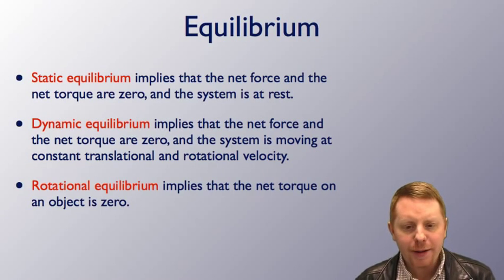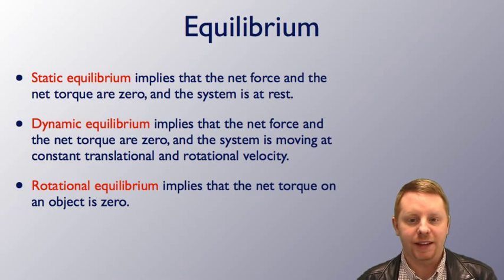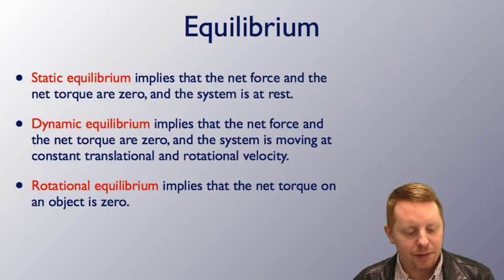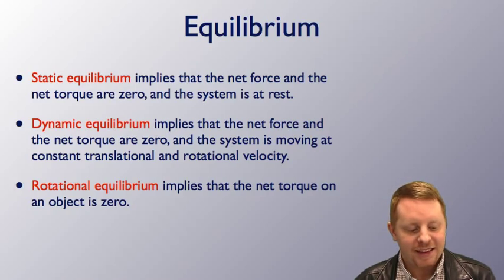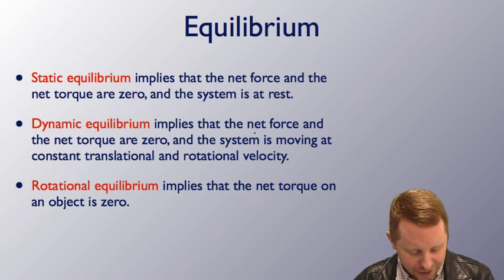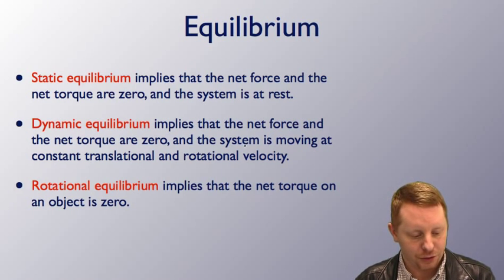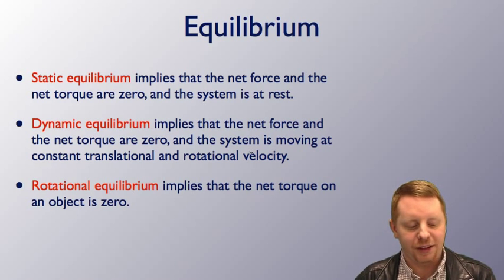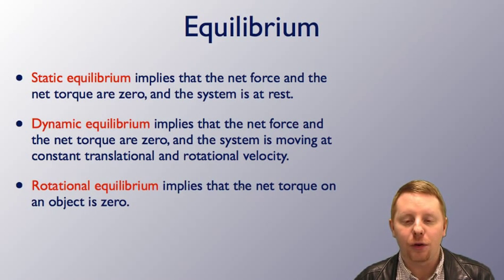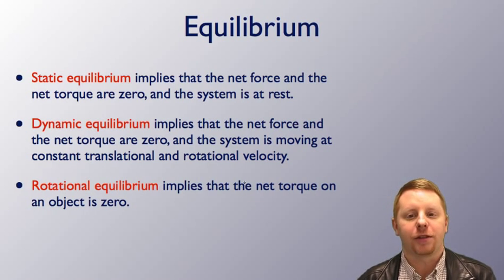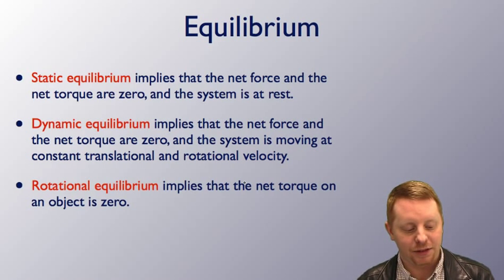Now as we talk about equilibrium, we're going to talk about three types. Static equilibrium implies that the net force and the net torque are zero, and the system is at rest. Dynamic equilibrium implies that the net force and the net torque are zero, and the system is moving at constant translational and rotational velocity. Rotational equilibrium implies that the net torque on an object is zero, so it's going to continue in its current state of angular velocity.